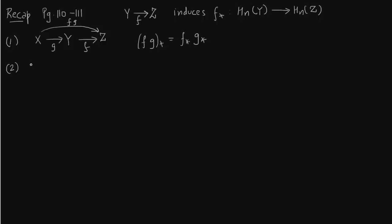Second important point is the identity map. You go from space X to X, the homomorphism you induce from H_n(X) to H_n(X) is nothing but identity map. So where 1 is the id.